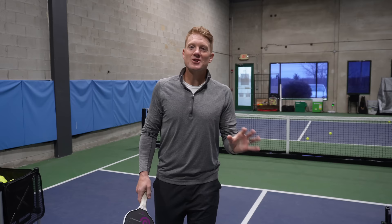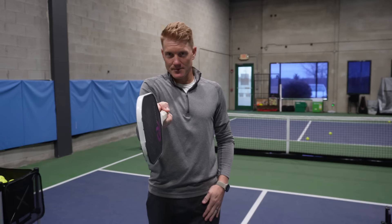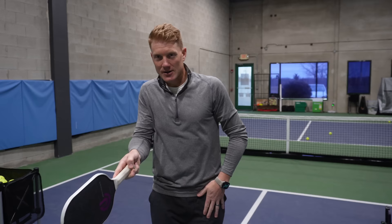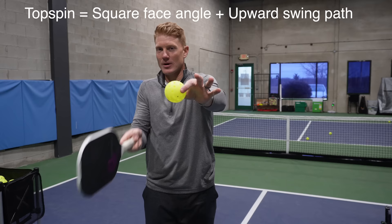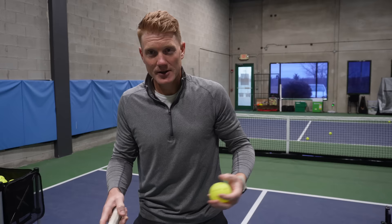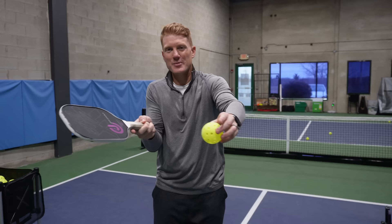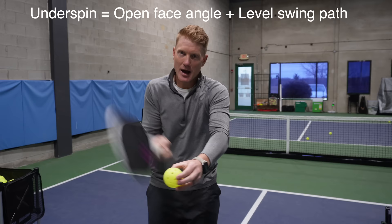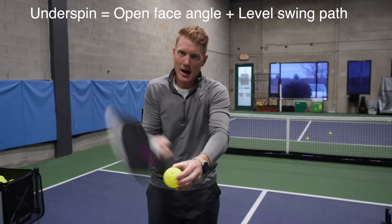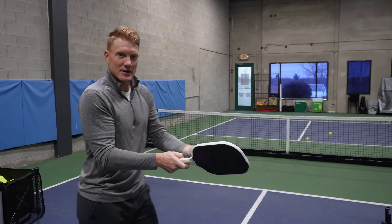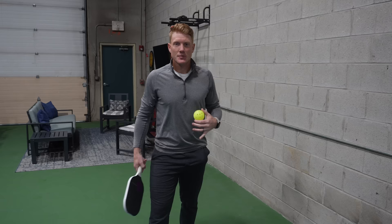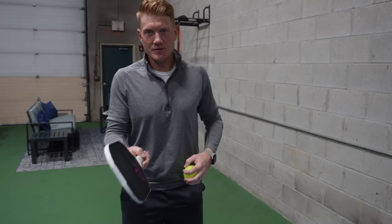Let's talk topspin first. In general, topspin is going to be a square face angle — not open, not closed, but straight up and down — and it's going to be a low to high swing path. So if the face is square and the swing goes low to high, it's going to brush up on the ball. The opposite is underspin: with underspin, in general, you want an open face angle and a fairly flat swing path. One of the big mistakes I see is chopping down too much. You do not need to come down on the ball to create underspin. A fairly flat swing and an open face angle is going to apply underspin to the ball.